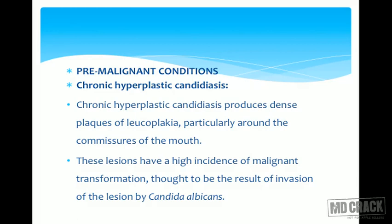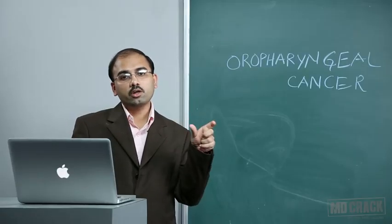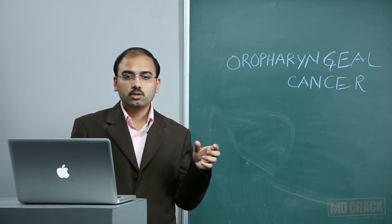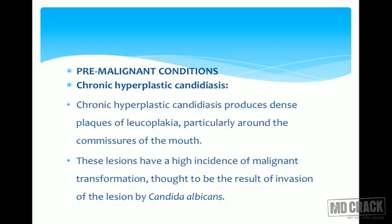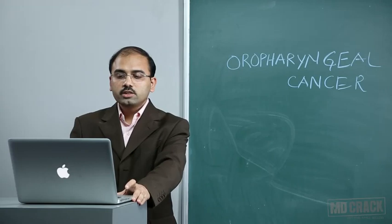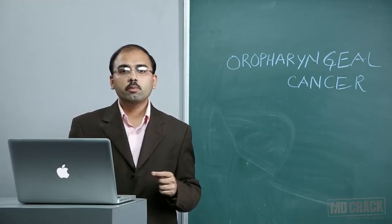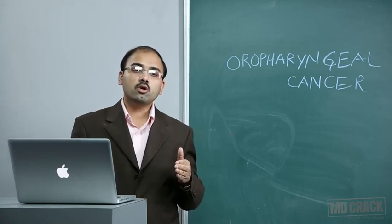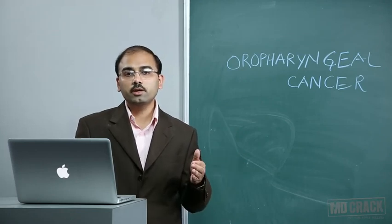Chronic hyperplastic candidiasis produces dense plugs of leukoplakia, particularly around the commissures of the mouth, which is the most common site. These lesions have a high incidence of malignant transformation, thought to result from invasion by Candida albicans. Treatment includes prolonged topical antifungal treatment for 6 weeks or systemic antifungal treatment for 2 weeks. If the lesion persists after medical therapy, surgical excision or laser evaporation should be done.